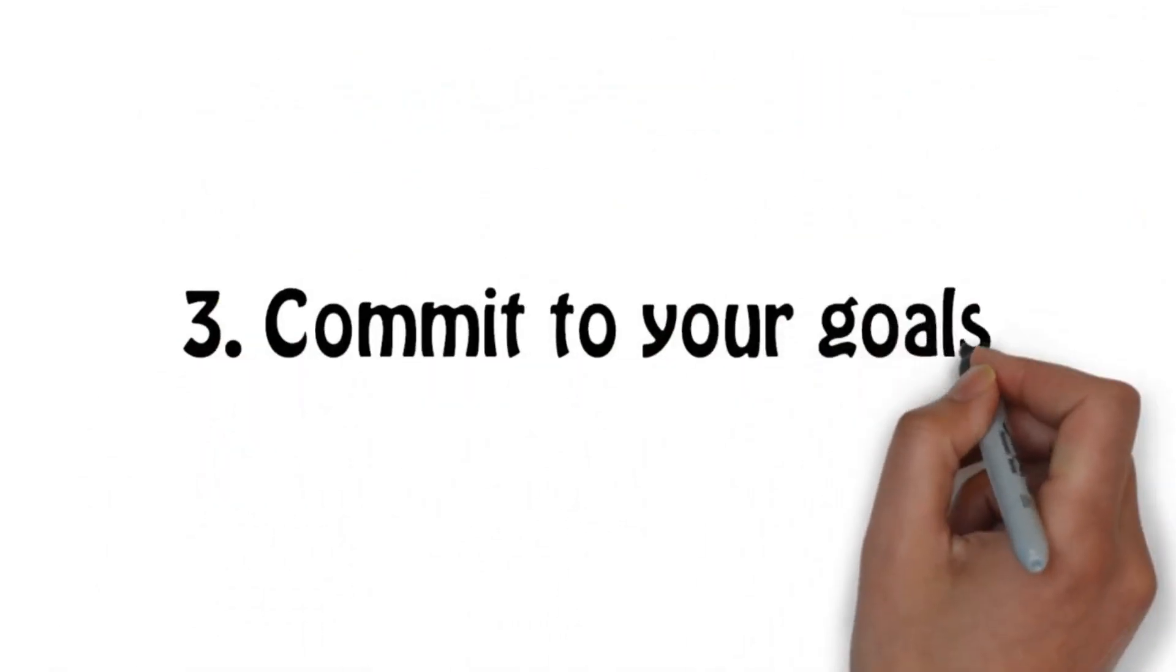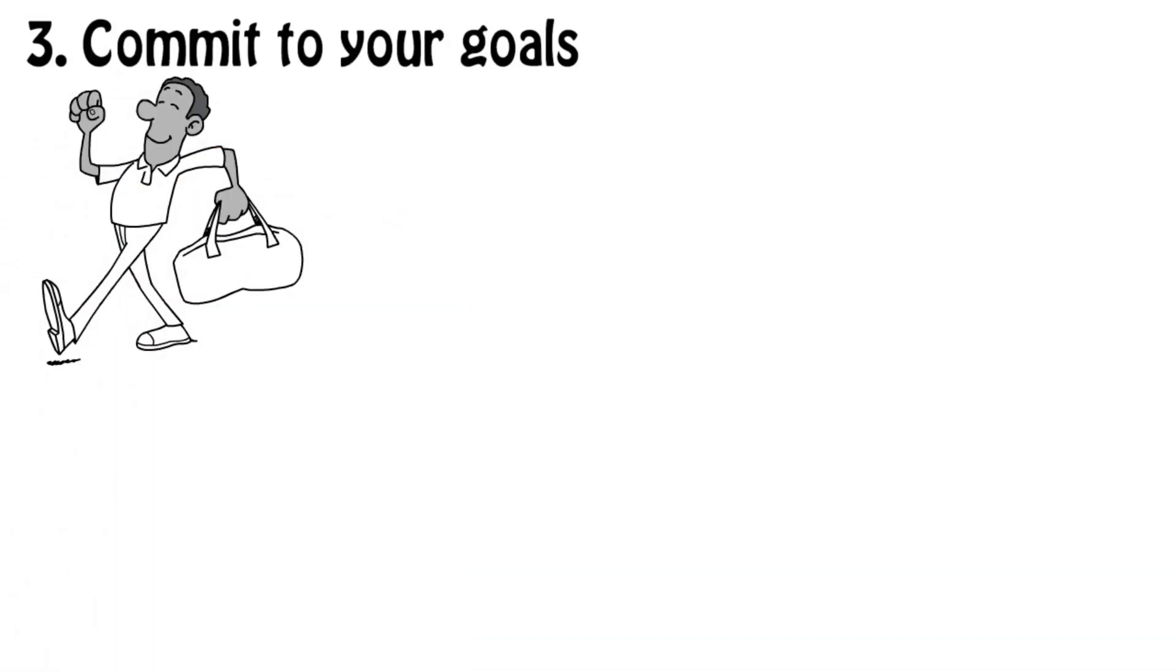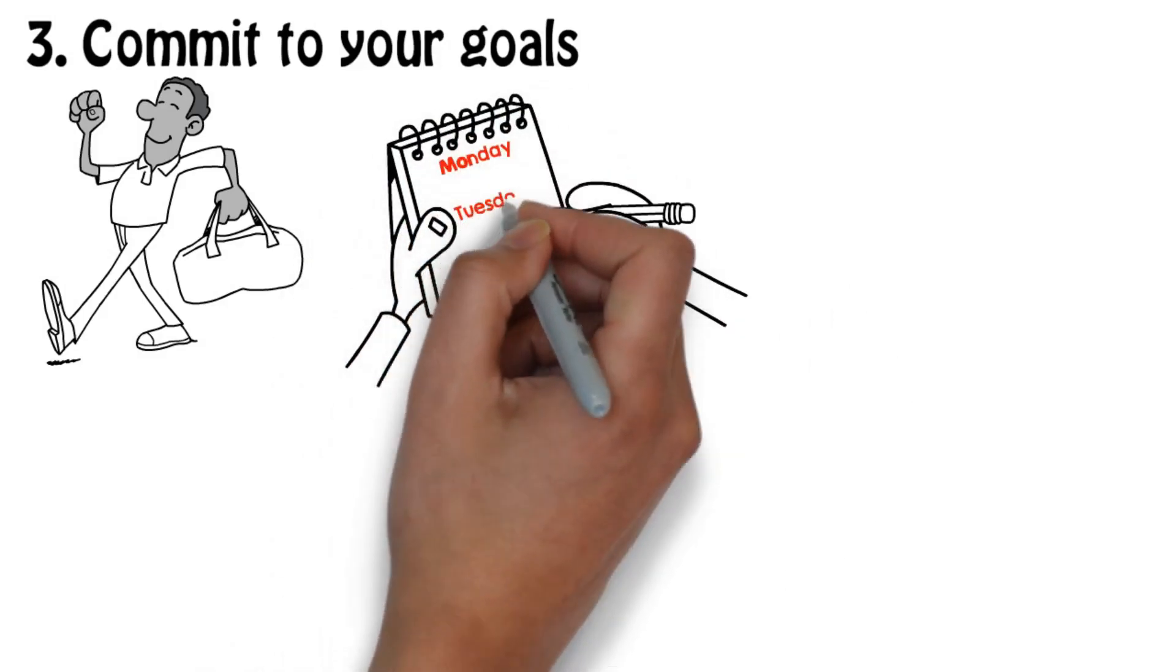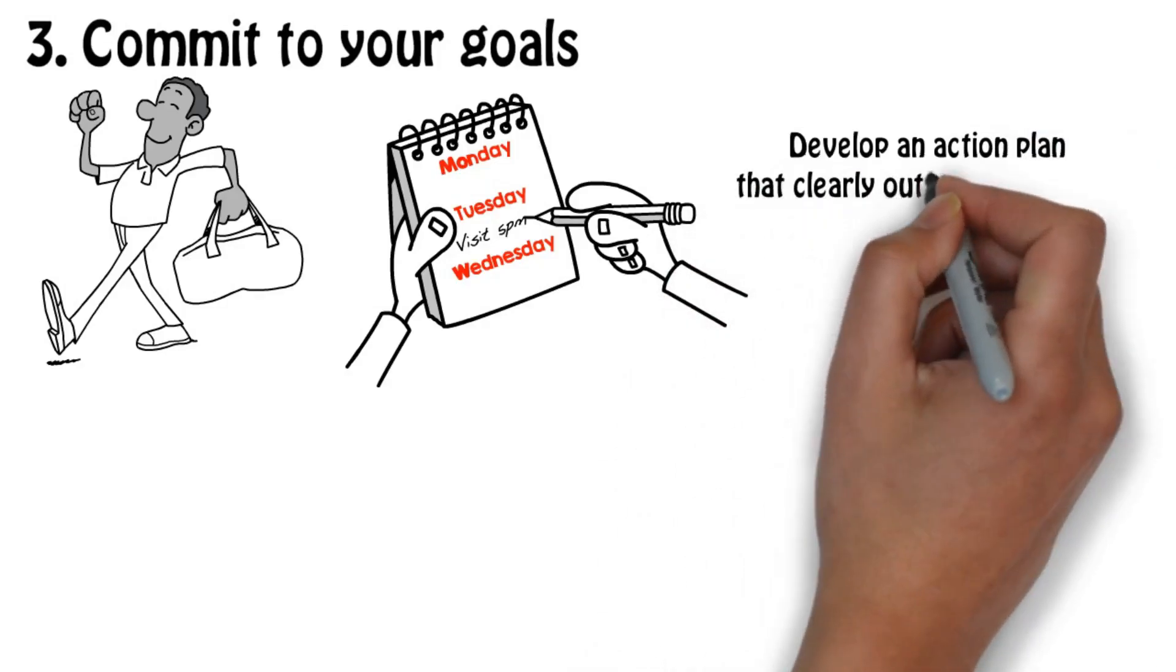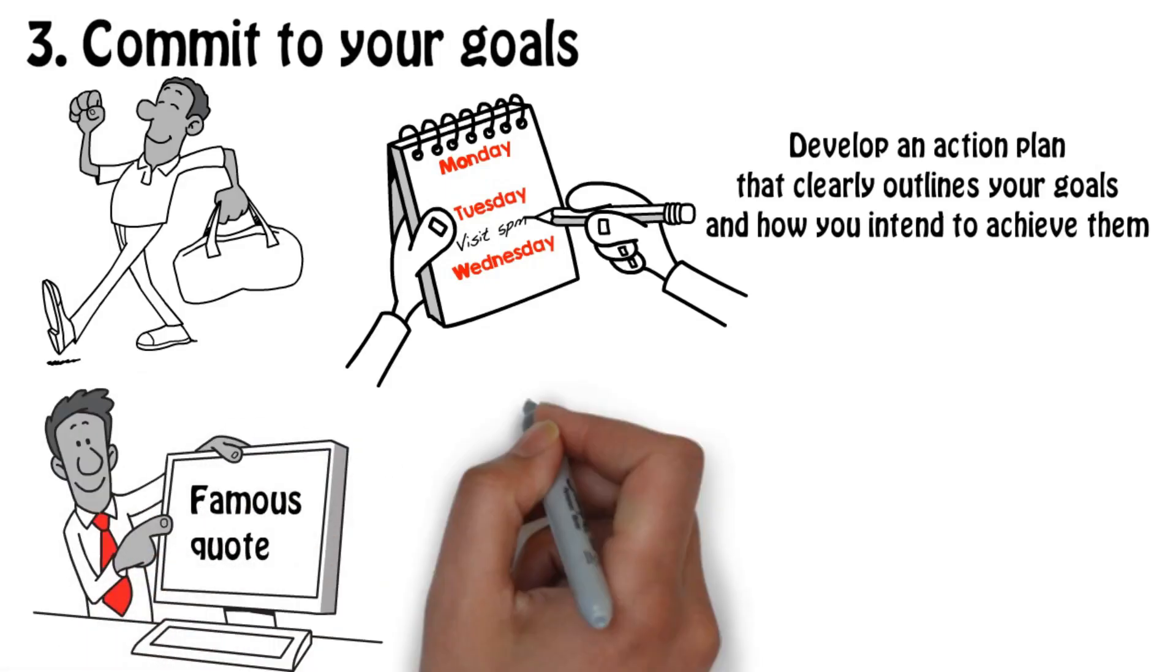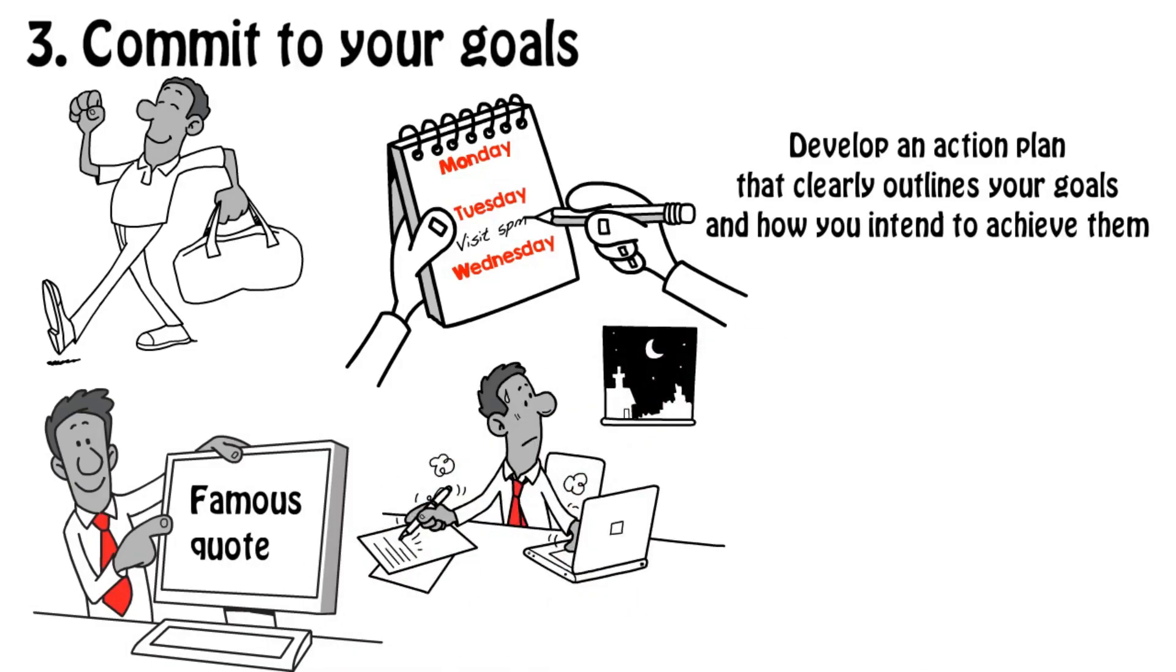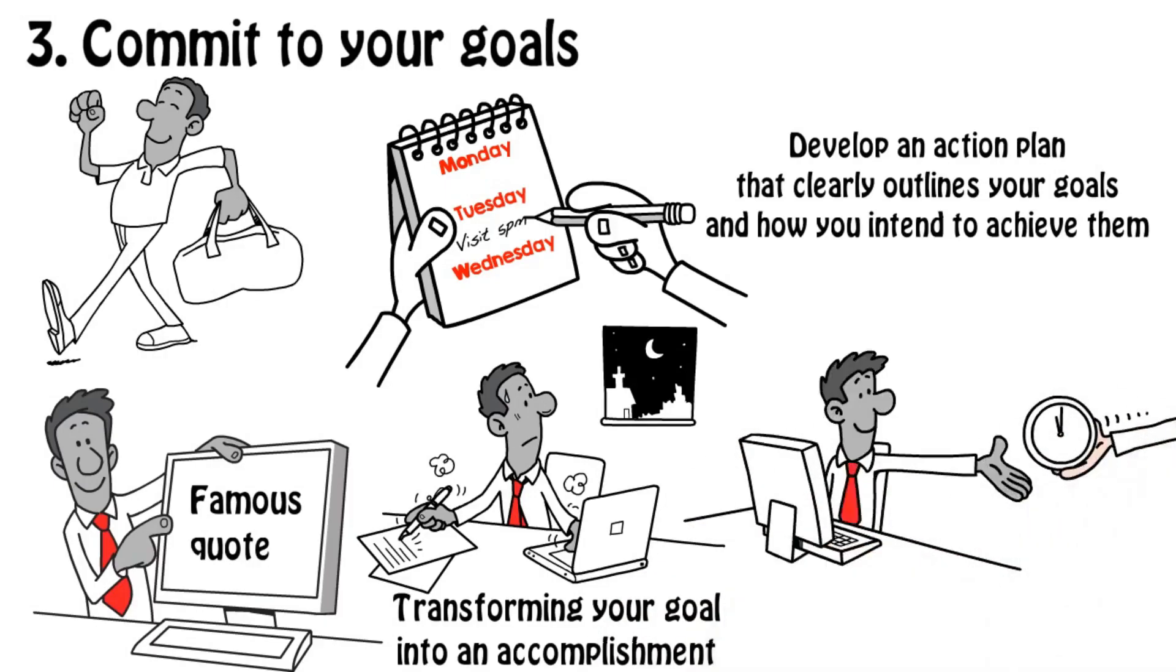Number 3: Commit to your goals. You need to dedicate yourself to accomplish the goal you have chosen. That's why writing your goals down is a common goal setting tip. It's the first step to committing to achieving your goals. Develop an action plan that clearly outlines your goals and how you intend to achieve them. Motivate yourself with rags to riches stories or a famous quote. Also realize that accomplishing a goal is not an overnight process and that you're going to have to work regularly at transforming your goals into accomplishments and you have to set aside the time you will need to work on your goal.